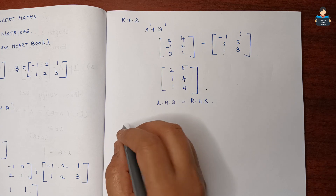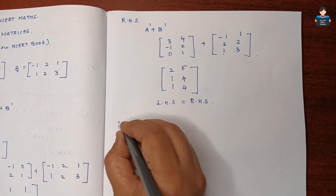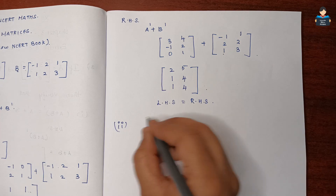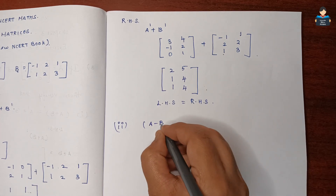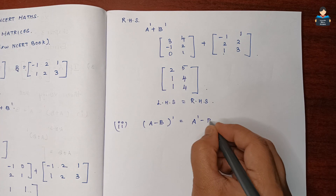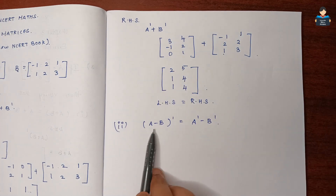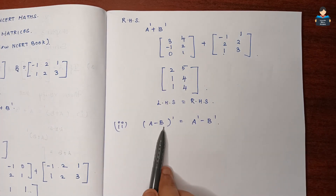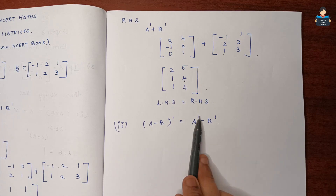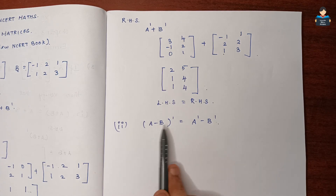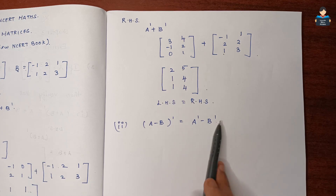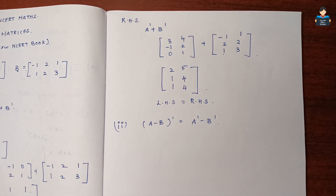Next is the second subdivision. We will prove that (A minus B) transpose equals A transpose minus B transpose. We will verify this.